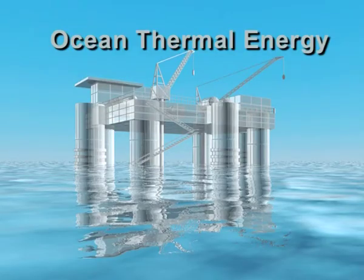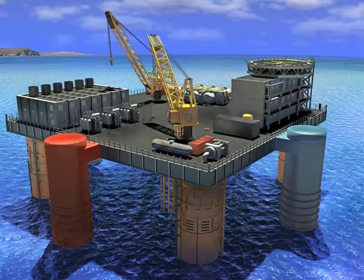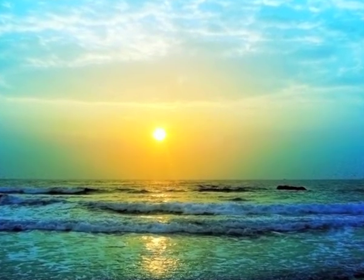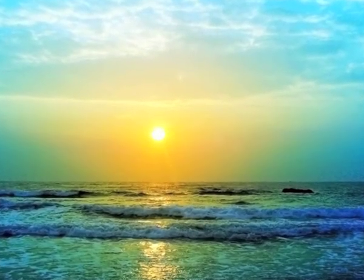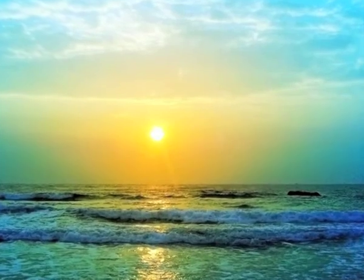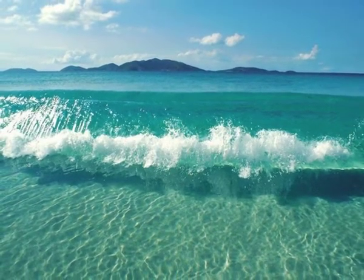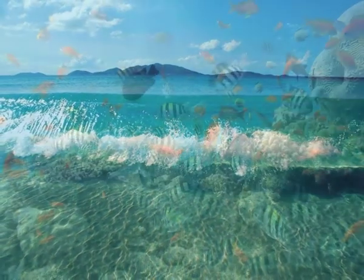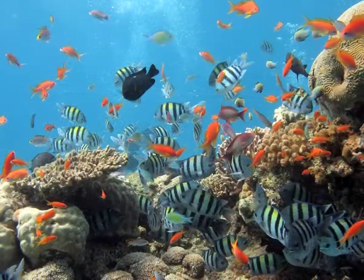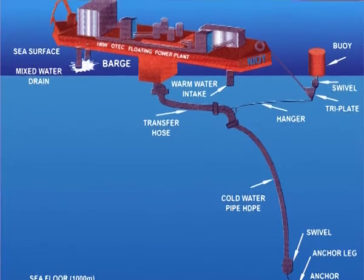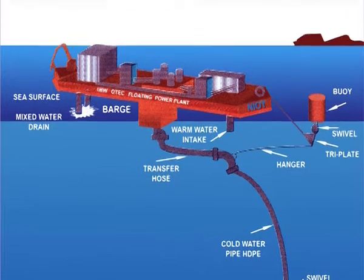The next type is ocean thermal energy. The oceans collect and store huge quantities of solar radiation in the form of heat. Most of the heat is stored on the surface of the seawater, while the temperature of the deep water is generally very low. The temperature difference between the surface and the deep water is converted into electricity.